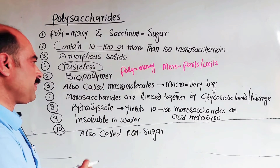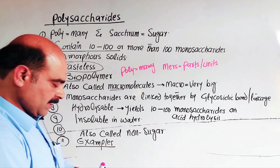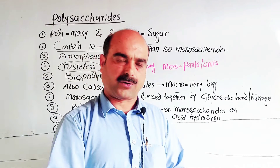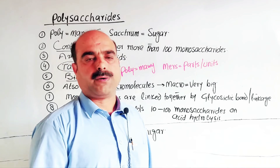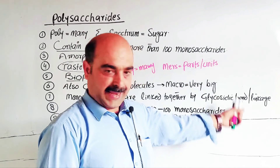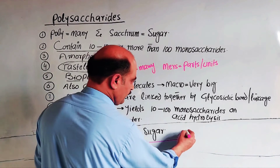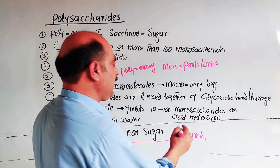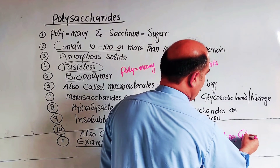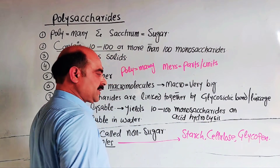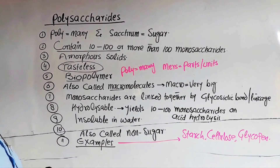Another property: polysaccharides are insoluble in water. These are also called non-sugars because they are tasteless. Examples of polysaccharides include starch, cellulose, and glycogen. Starch and cellulose are found in plants, while glycogen is another important example. These are the main examples of polysaccharides.